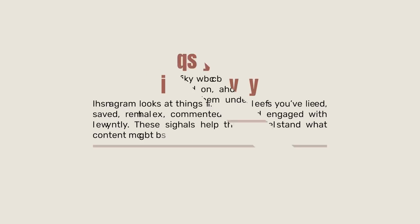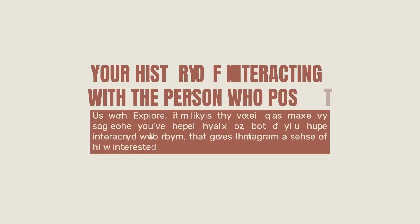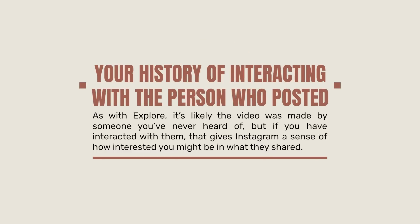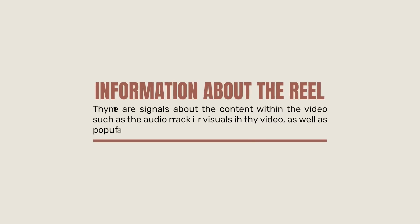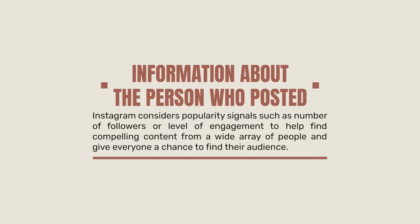For activity, they look at which reels you've liked, saved, shared, commented on, and engaged with recently to understand what content might be relevant to you. Your history of interacting with the person who posted — same as Explore — even if you don't follow them, prior interactions may rank their content a little higher. Information about the reel includes signals about the content within the video itself: the audio track, visuals, what the video is about, the caption, pop-up text — all in addition to popularity and engagement. Finally, information about the person who posted: they consider popularity signals such as number of followers or level of engagement to help find compelling content from a wide group of people and hopefully give everyone a chance to find their audience.